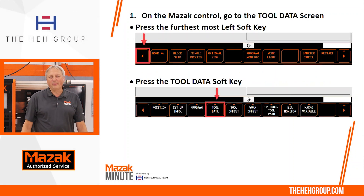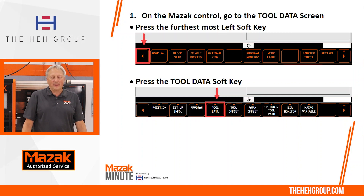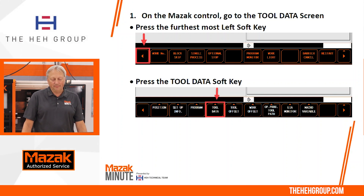First off we need to get to the tool data screen. To do that we're going to go to our control, press the furthest most left arrow key, then press the tool data soft key.